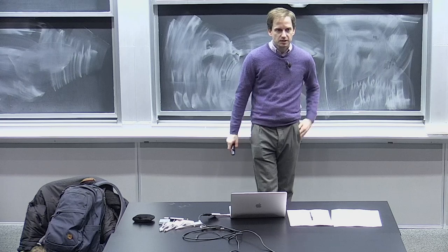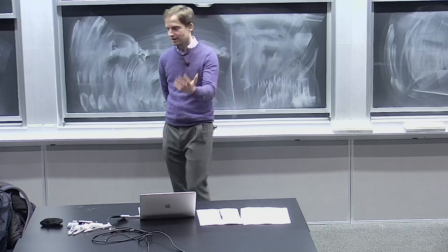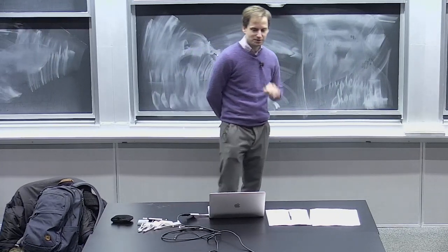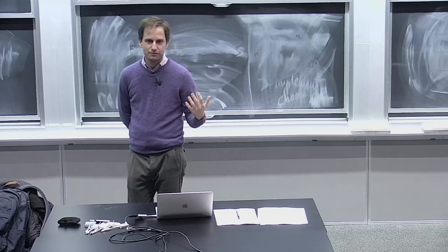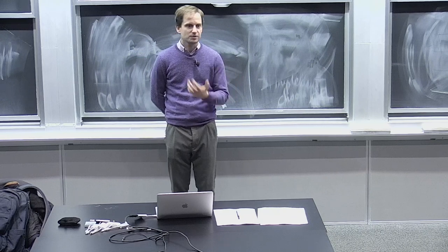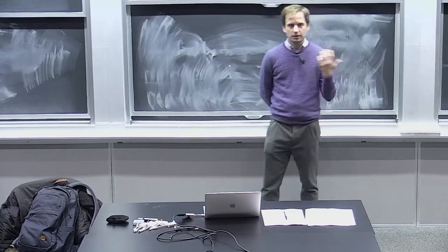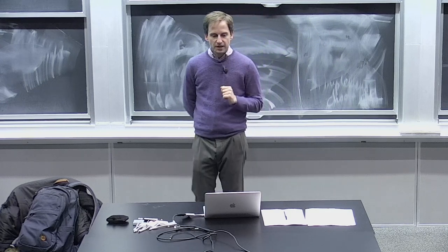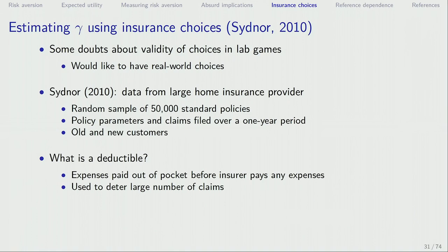What we started last time was thinking about insurance choices. This is a very nice paper by Justin Sittner, and one very nice feature is that it involves real-world choices — not lab experiments with undergrads, but data from a large home insurance provider. He has about 50,000 standard policies that are representative of what people choose overall.